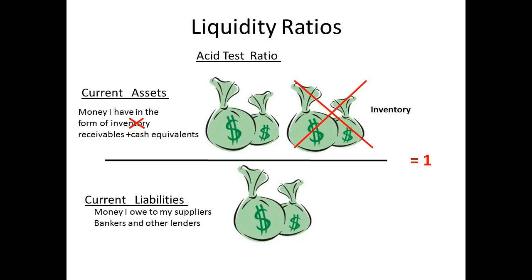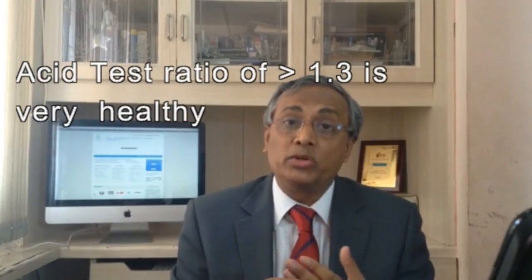There's another version of this ratio — a tighter version known as the acid test or quick ratio. In this ratio, only very liquid assets — cash, cash equivalents, and accounts receivable — are taken in the numerator, because inventory is considered more illiquid and more difficult to liquidate. The acid test ratio is therefore the ratio of the most liquid assets (cash and accounts receivable) to the company's total debt. If this ratio is above 1, it means that even without accounting for inventory, your assets in hand today are sufficient to cover your debts. A figure of about 1.2 to 1.3 is excellent.